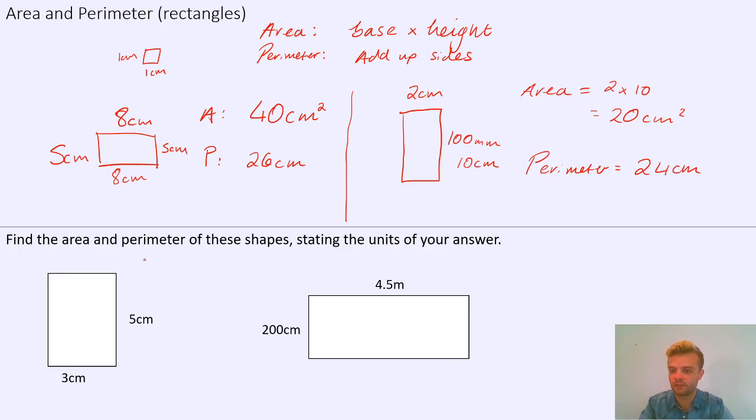So for this first one, the area is the base times the height, that's 3 times 5, so 15 centimeters squared, and it's centimeters squared because it's area. And the perimeter is going to be 3 plus 5 plus 3 plus 5. 3 plus 5 is 8, plus 3 plus 5 is 16 centimeters.